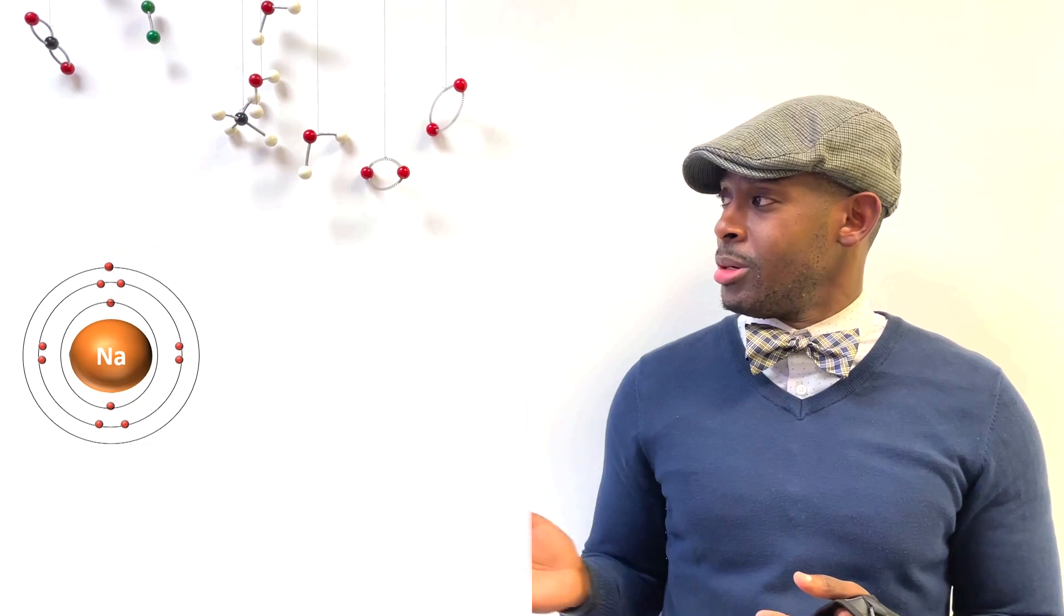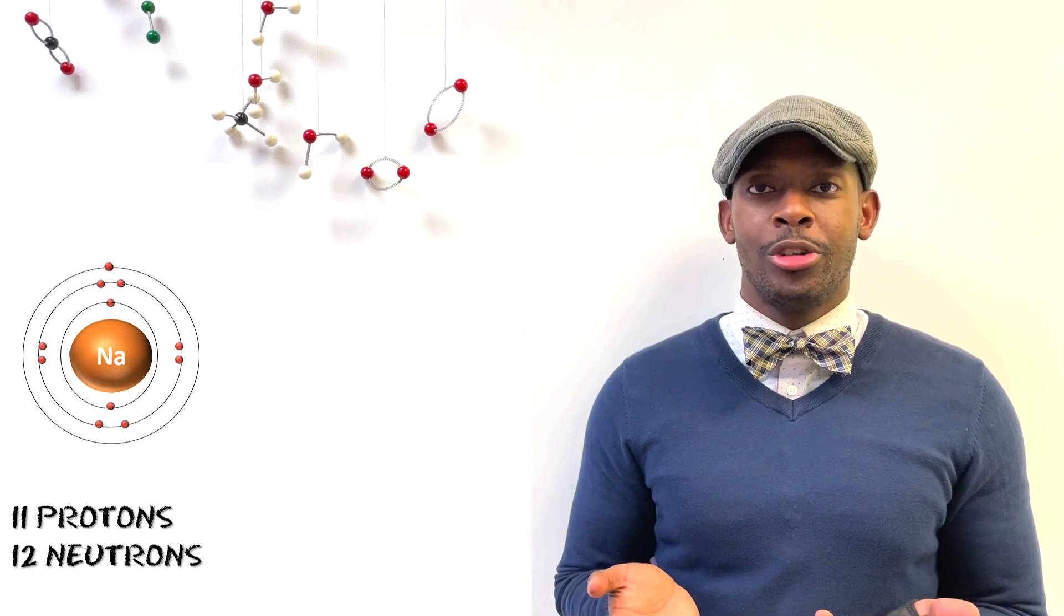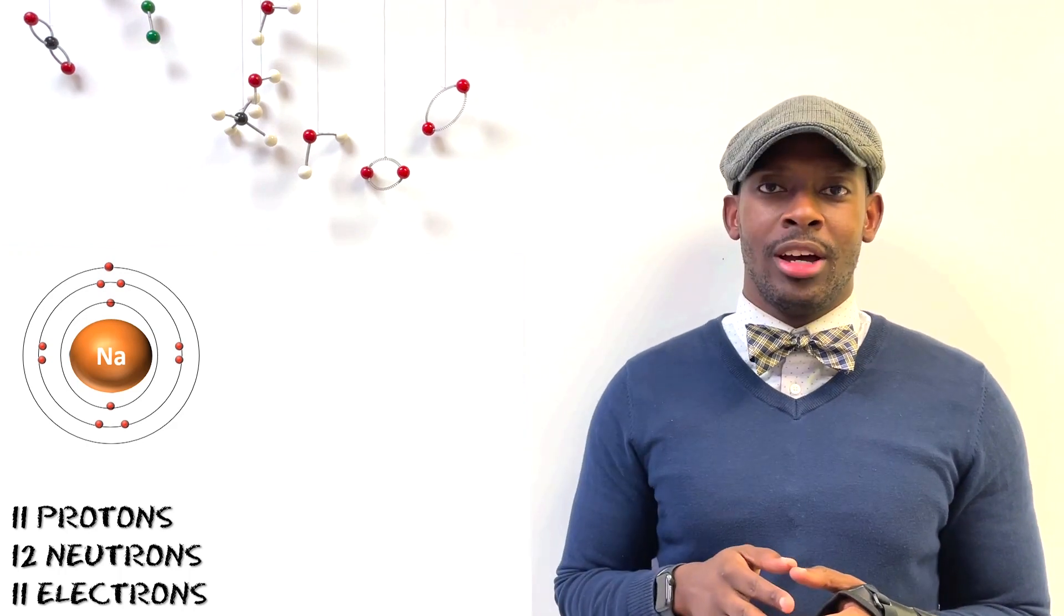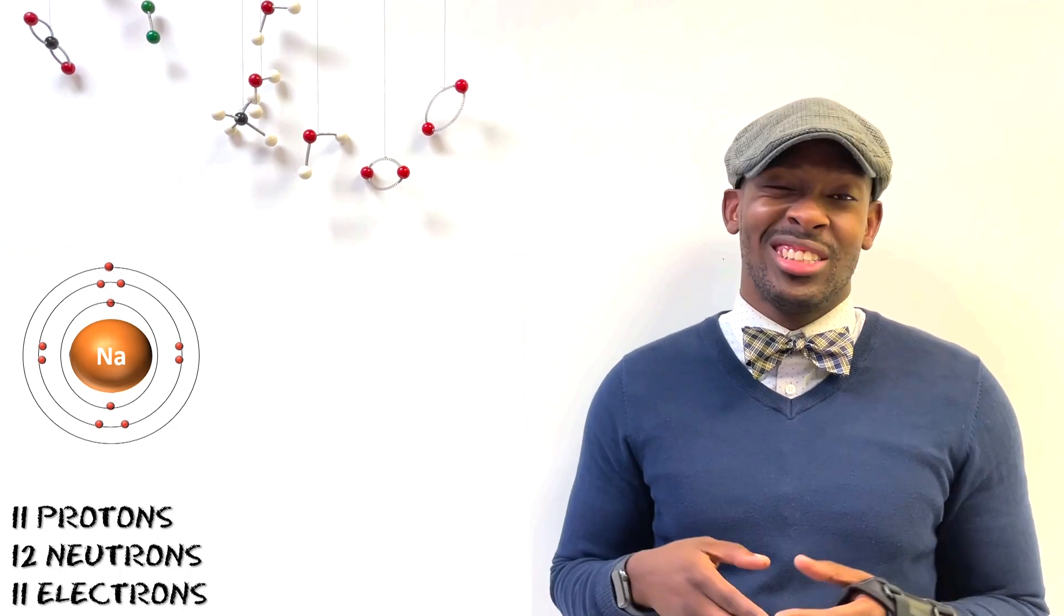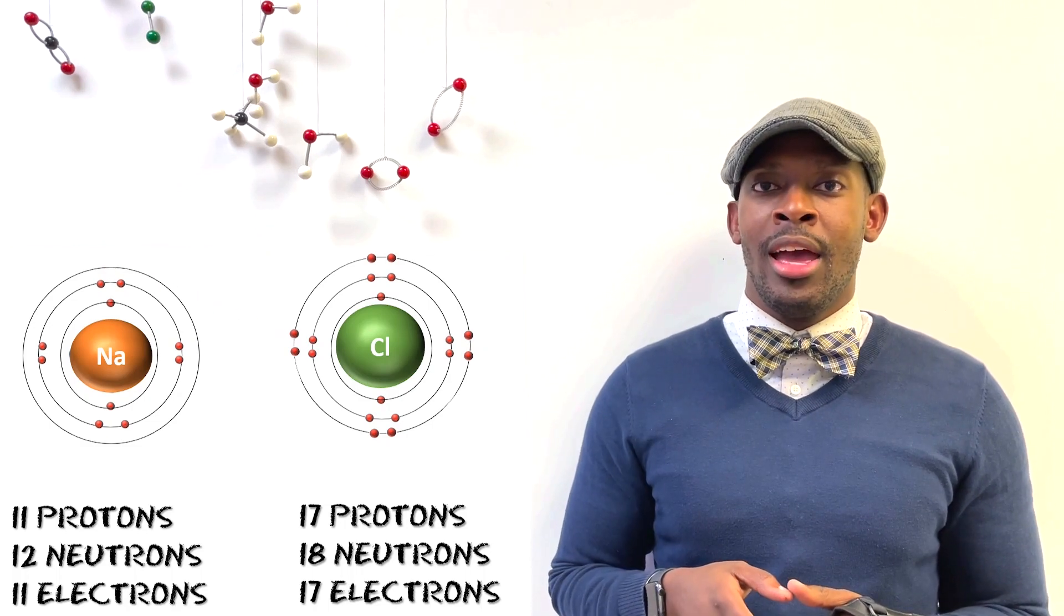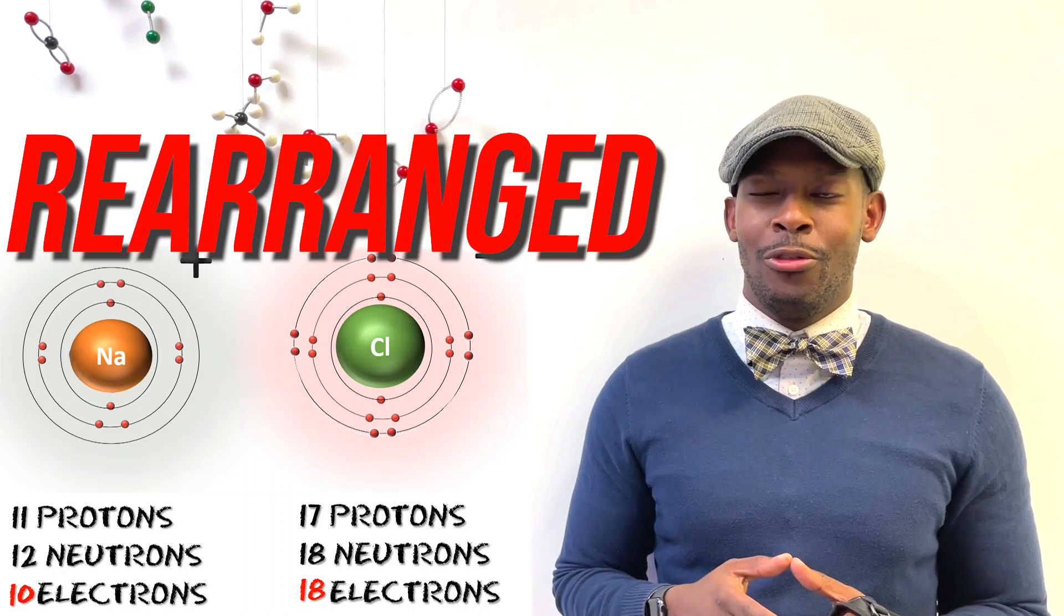We know that atoms have structure. Here's sodium. Sodium has 11 protons, 12 neutrons, and 11 electrons with that one valence electron. If you bring it near chlorine, it's going to lose that one electron and its structure is rearranged to form sodium chloride.